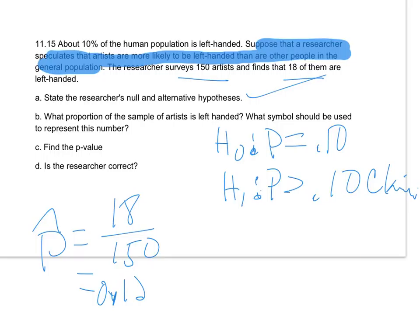What proportion of the sample artists is left-handed? We've got 150 artists and 18 of them were left-handed. So that is P-hat. 18 out of 150 is the fraction form. And that as a decimal is 18 divided by 150, I'm getting 0.12.